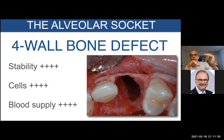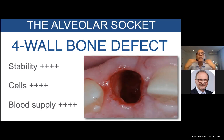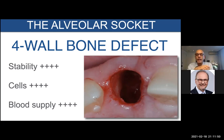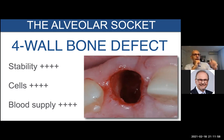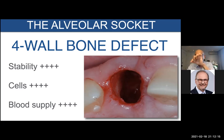On top of that, I have all this soft tissue. The soft tissue that covers the alveolar process will provide cells that will close the socket entrance. So this is perfect. The alveolar socket is a four-wall bone defect — great. Now let's keep that in mind, because not all four-wall bone defects are the same.